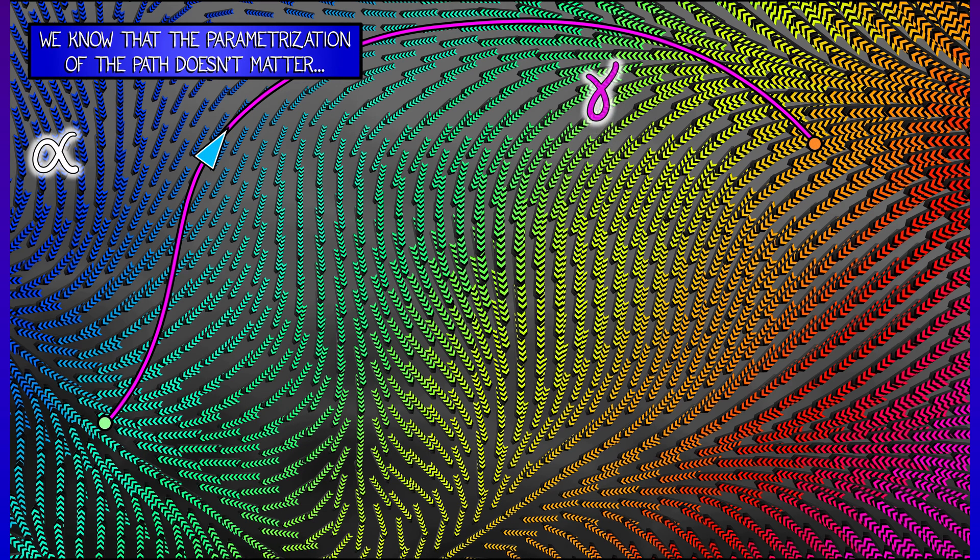Let's say you've got a one-form field alpha and a path gamma. Now, the one thing that we know is that the parametrization of the path doesn't matter. If you fix the path and you fix the orientation, you can move along it at any speed you want. You'll get the same integral.